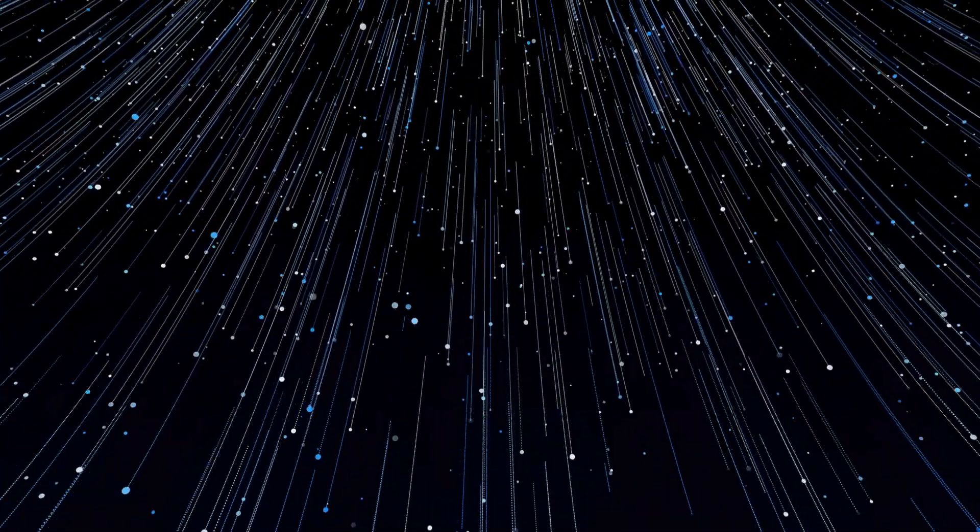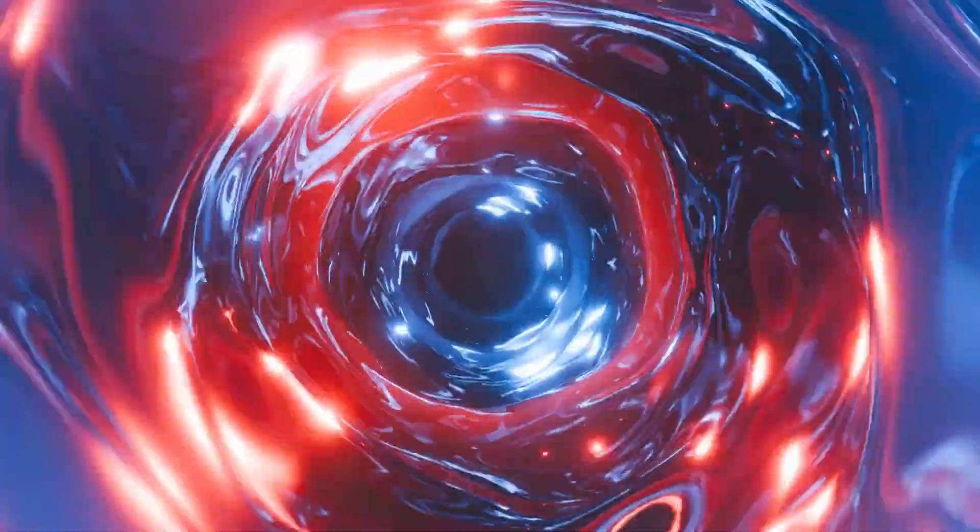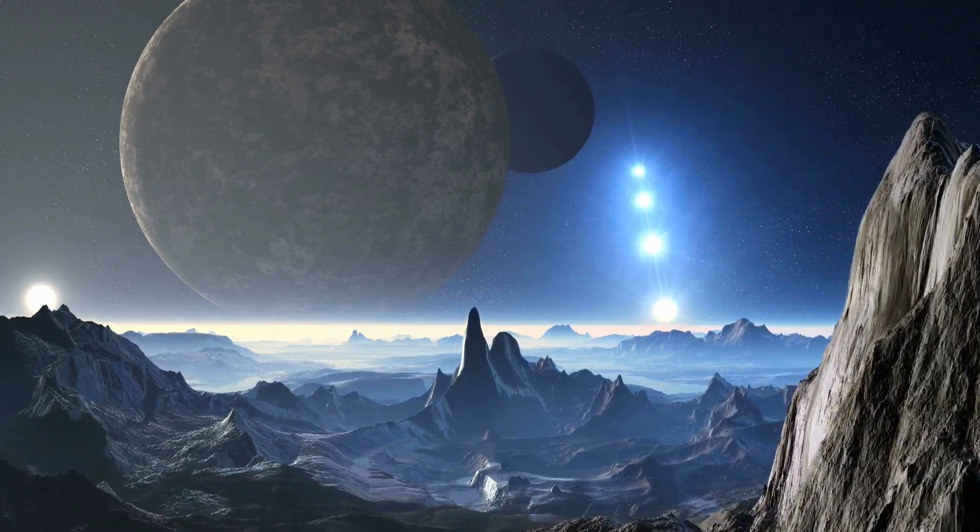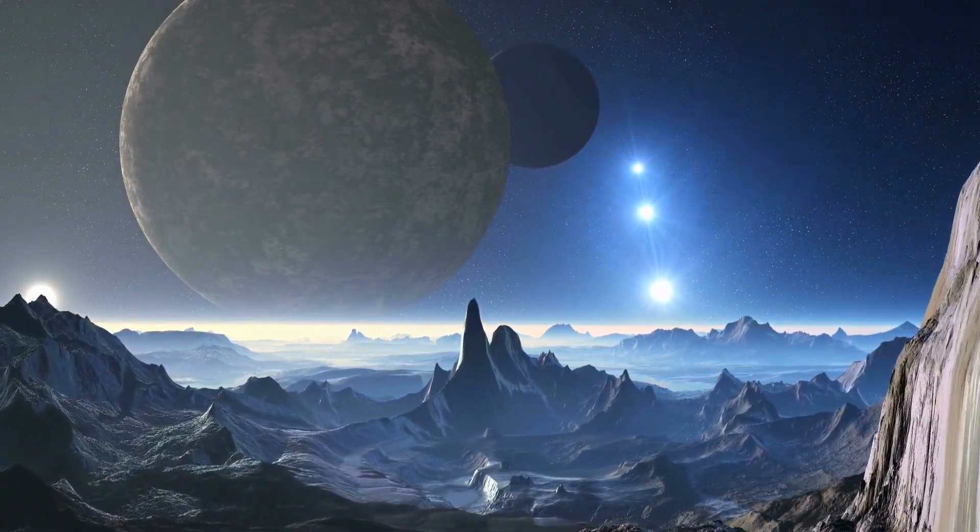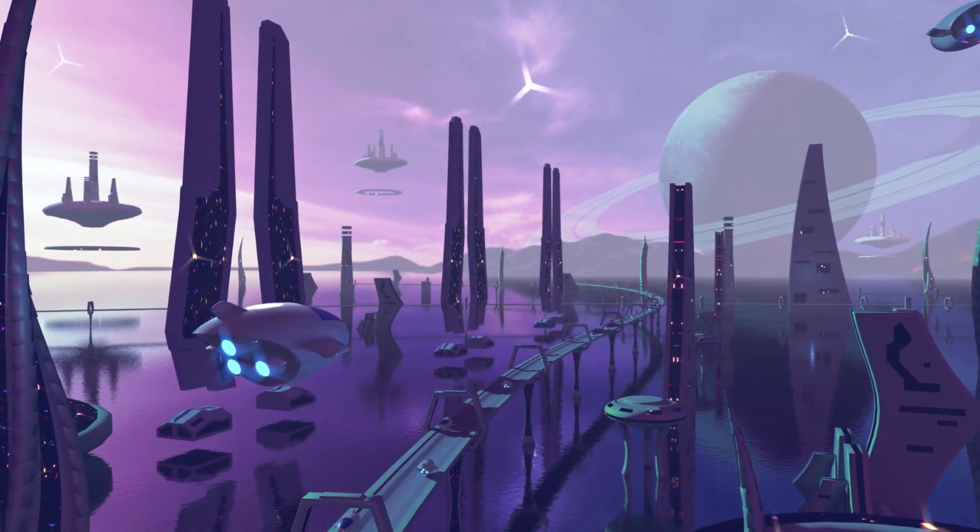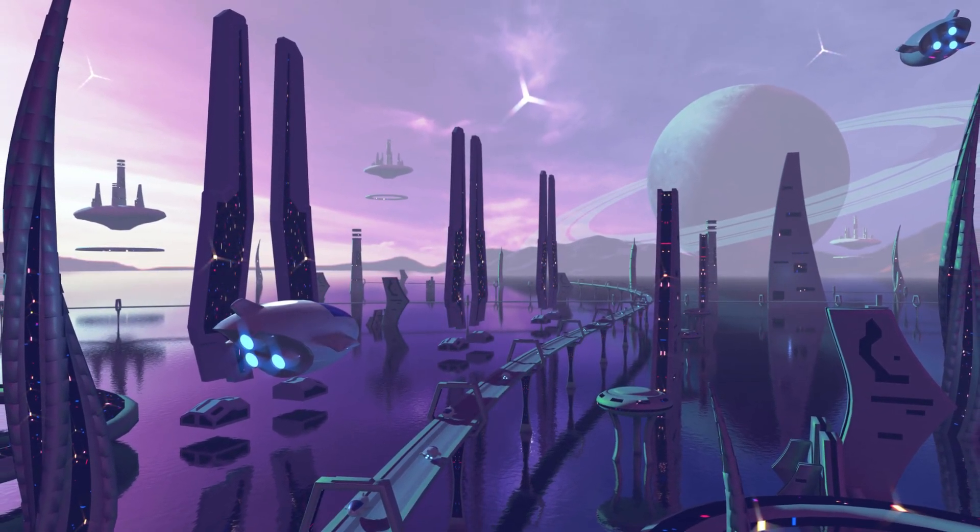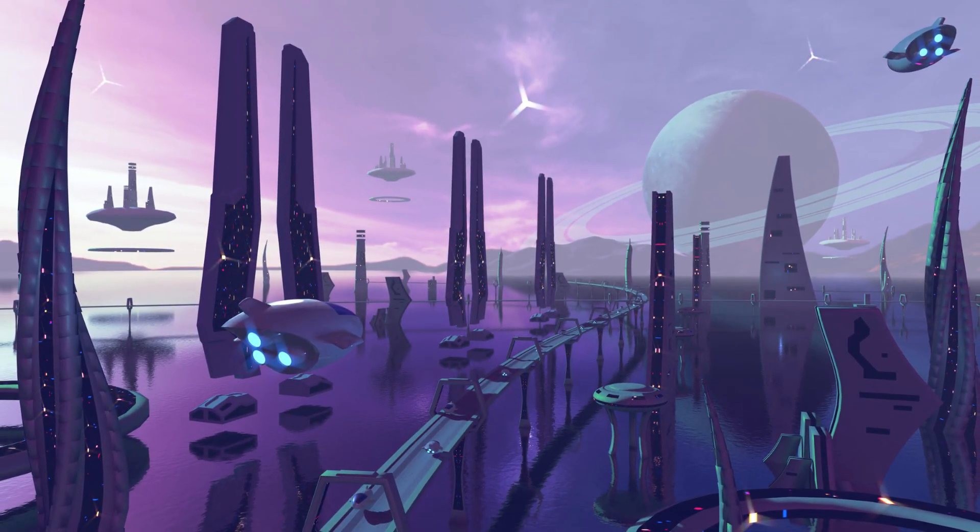Proxima Centauri B, nestled within the habitable zone of its star, has long been a focal point of intense scrutiny. This region, where temperatures are just right for liquid water to exist, is the cosmic sweet spot for life as we know it. The detection of artificial light on this exoplanet, lights that could rival the glow of Earth's megacities, has sent shockwaves through the scientific community.